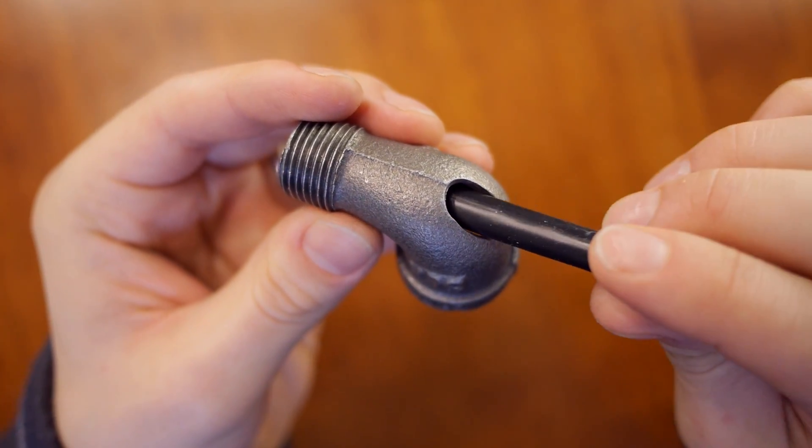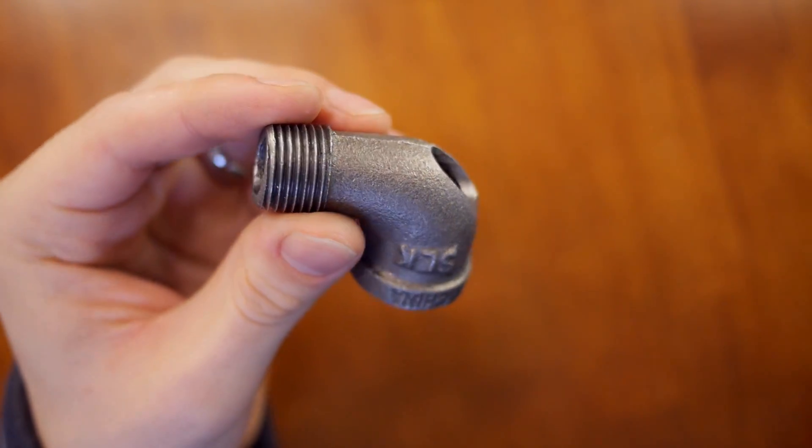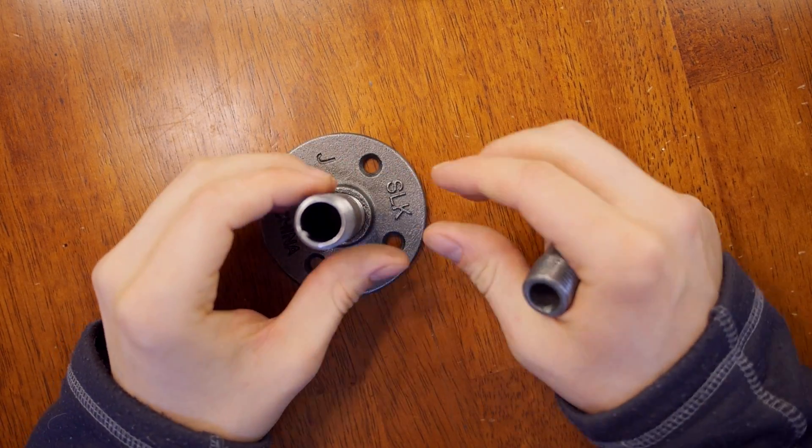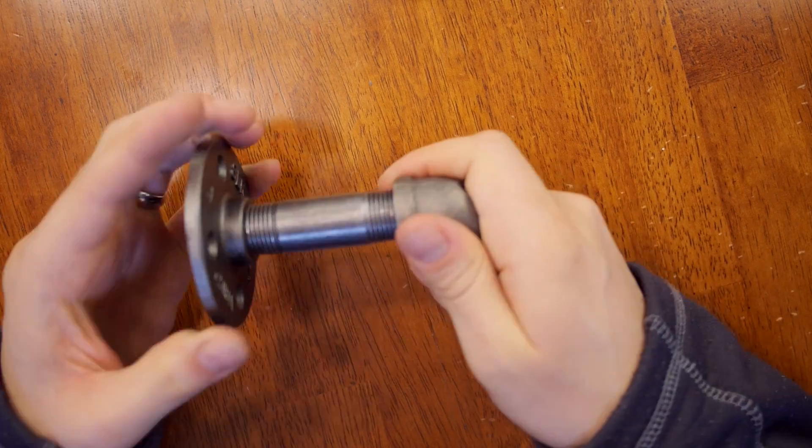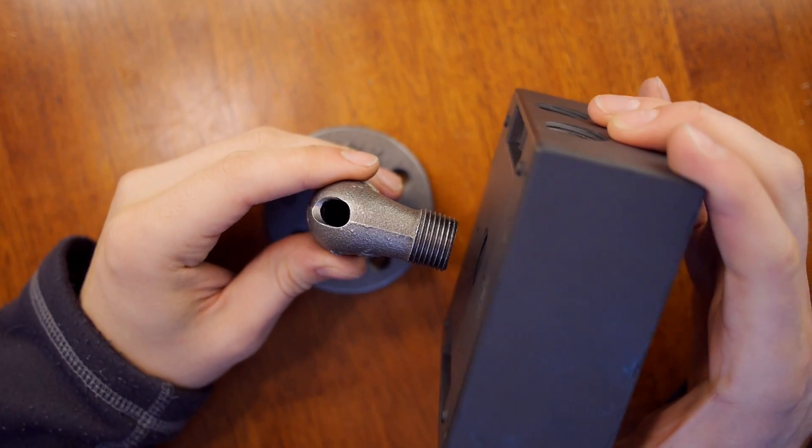I drilled a hole for the wire through the black pipe street elbow. The nice thing about the black pipe and conduit box is that everything simply screws together.